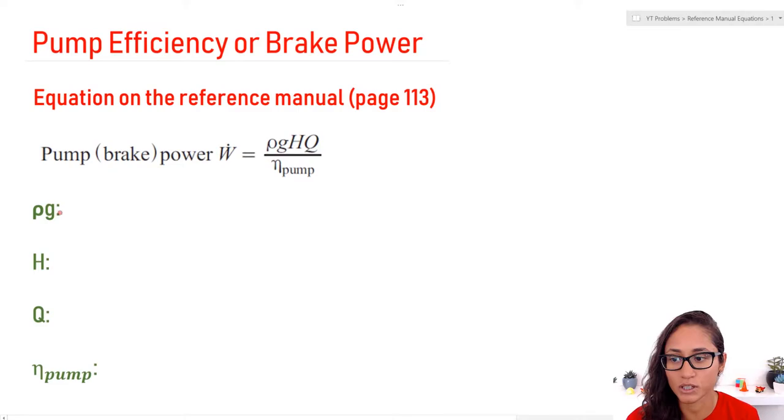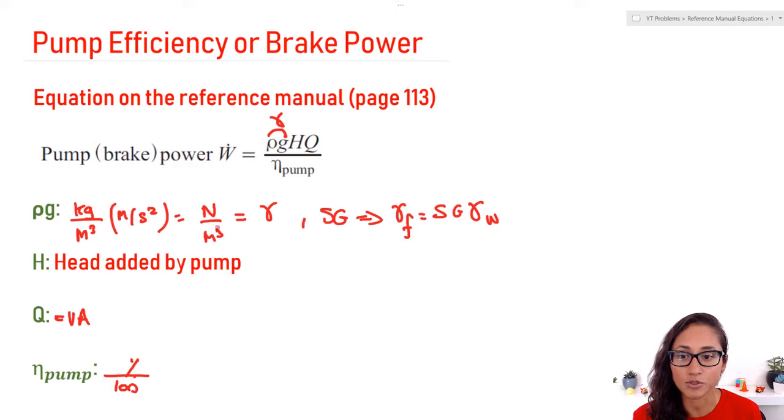Okay guys, so now let's go over the first term. So we have rho times g. Now we can easily simplify this. What is the unit for density? It's kilograms per cubic meters. G, gravity, it's meters per second squared. Kilograms, meters per second squared, that's newtons per cubic meters. And the units for this, it's really unit weight, right? Gamma.